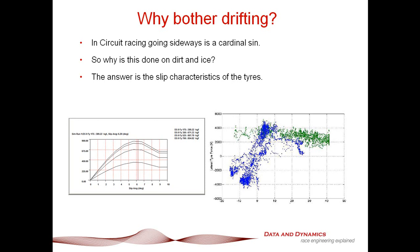Why do you bother drifting? In circuit racing, the first thing you are taught is you do not go sideways, because while it looks spectacular, you go spectacularly slowly. So why is it done on dirt and ice? The difference comes down to how tyres respond on tarmac versus dirt and ice. On a typical slip angle versus lateral force graph for a tyre on tarmac, we have a peak around about six degrees, and note that when we go into the post-stalled zone there's quite a bit of drop-off. Consequently, there's absolutely no point going into that area — and particularly on tarmac, large slip angles will overheat the tyre. For those two key reasons, you never want to do this on tarmac.